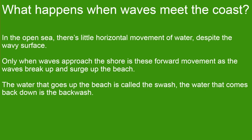So what happens when waves meet the coast? In the open sea there's not much horizontal movement of water moving across towards the coast, despite the wavy surface — there's just a general pattern of water moving. However, only when waves approach the shore is a forward movement present, because the waves break up and surge up the beach. The water that goes up the beach is called the swash, and the water that comes back down is the backwash.